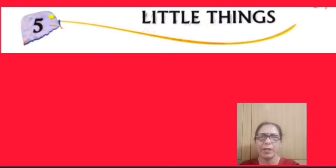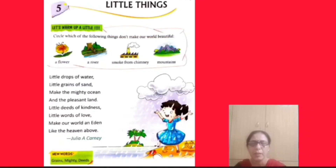Children, today we will revise the 5th chapter of your reader book, 'Little Things.' This chapter is given on page number 29 of your reader book. Now, let's review the poem through its animation.